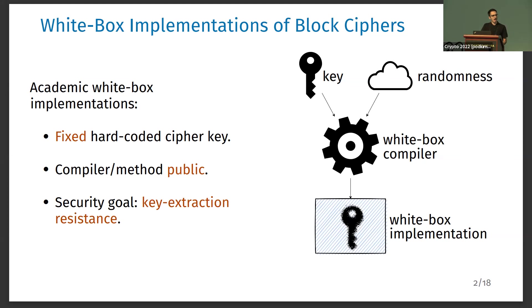A white box attacker can have different goals: for example, extracting the key of the implementation, copying the implementation to another device, or even getting the decryption function of a white box implementation of the encryption function. Here we focus on key-extraction resistance, which is the minimum goal a white box implementation should achieve. Even achieving this goal is very ambitious because it implies a white box implementation should be secured against all side-channel and fault attacks.